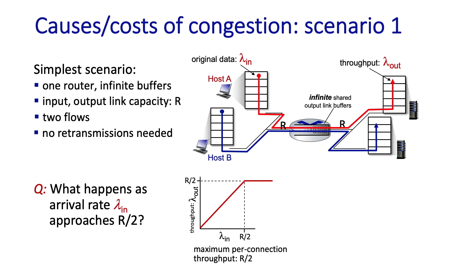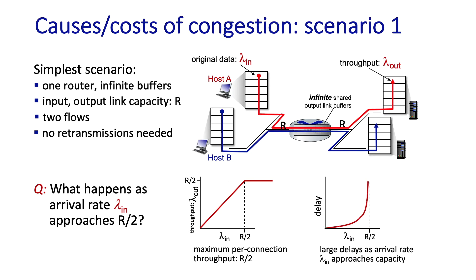This looks pretty good from a throughput standpoint, but we learned in chapter 1 that when the arrival rate to a link comes close to the link's transmission rate, large queuing delays can occur, as shown here. So we already see that there are delay costs, even in this idealized scenario.